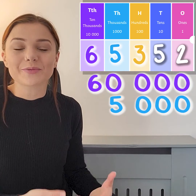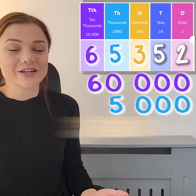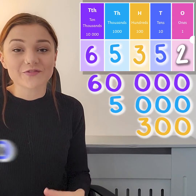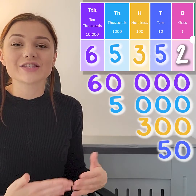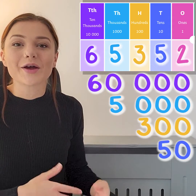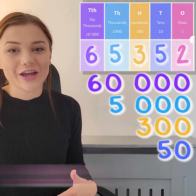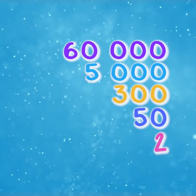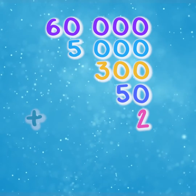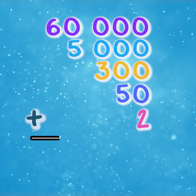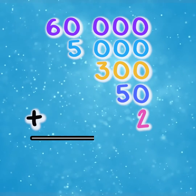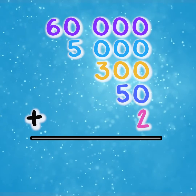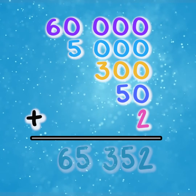Three hundreds, which is three hundred. Five tens, which is fifty, and two ones, which is two. We know that sixty thousand add five thousand, add three hundred, add fifty, add two is sixty-five thousand.